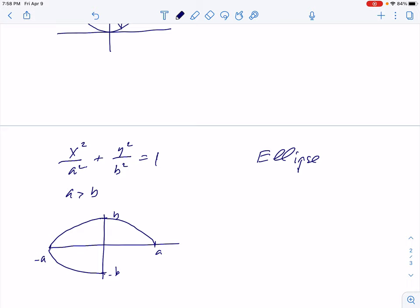We mark a and negative a on the horizontal axis, b and negative b on the vertical axis. We connect these points like that to get our ellipse. The ellipse has two focuses called foci. Let's take the number c, which is square root a squared minus b squared.